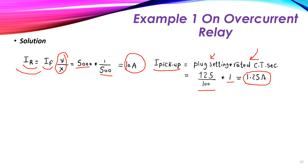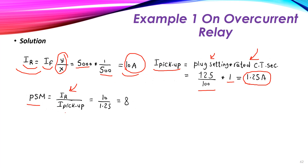We now have the relay-side fault current of 10 amperes and the pickup current of 1.25 amperes. The plug setting multiplier (PSM) equals the relay current divided by the pickup current: 10 ÷ 1.25 = 8. This is dimensionless — it means the fault current is 8 times the pickup current.